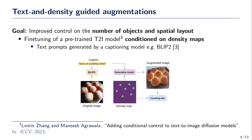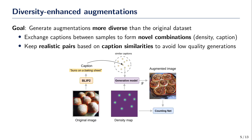This approach produces effective augmentation, but it shares the semantics and geometric layout of the original image. We thus introduce a strategy to diversify the generated data. We propose to swap captions between training samples to form novel density-caption combinations.